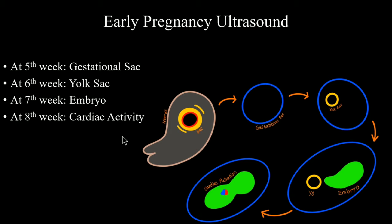Now let's talk about the ultrasound features. At the 5th week of gestational age, you will see a tiny anechoic cystic structure at the center of the uterine body called the gestational sac. At the 6th week, you will see another anechoic cystic structure within the gestational sac called the yolk sac. At the 7th week, you may or may not find the yolk sac transabdominally, but you will see a small embryo that looks like a solid structure. At the 8th week of gestation, you will see moving structure within the embryo — that's cardiac pulsation. So: gestational sac at 5th week, yolk sac at 6th, embryo at 7th, and cardiac activity at 8th week.